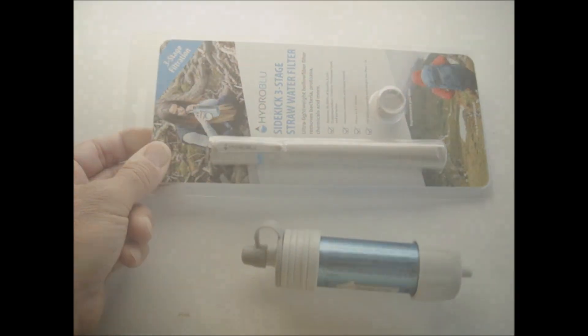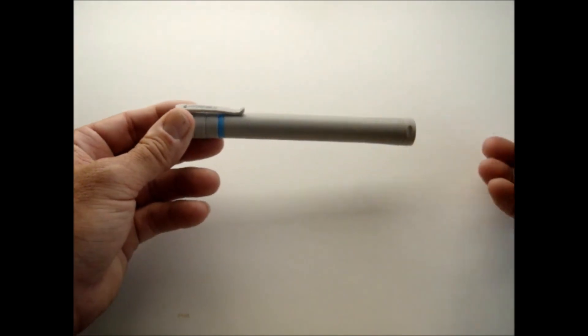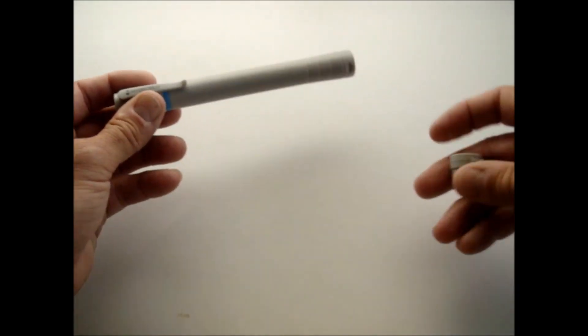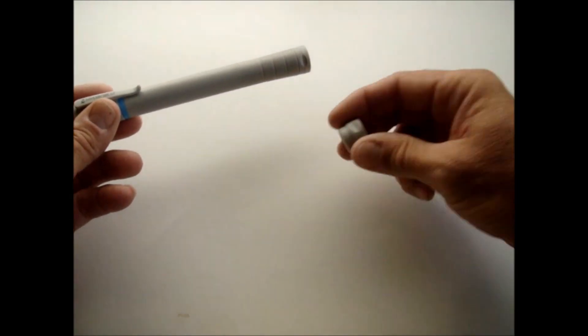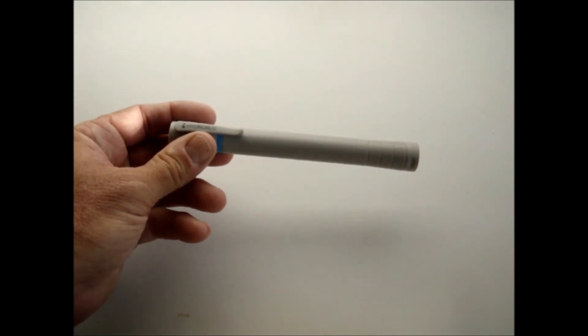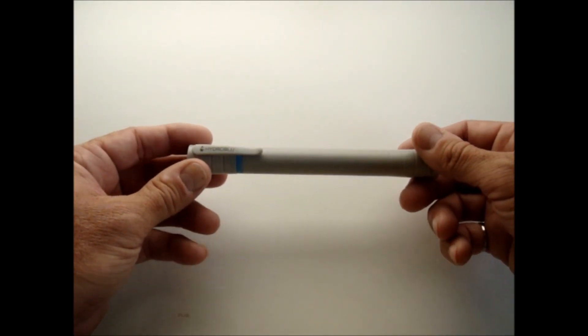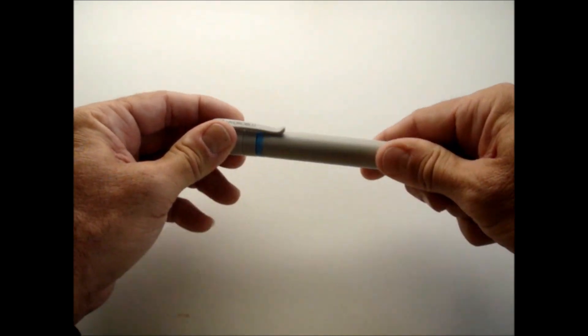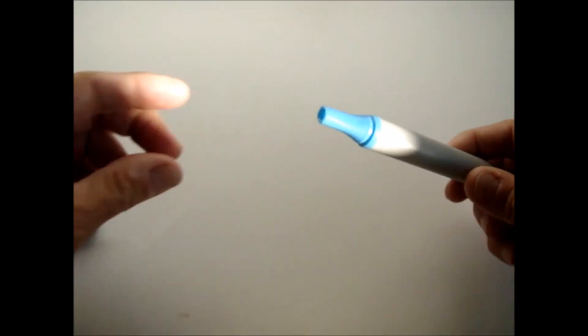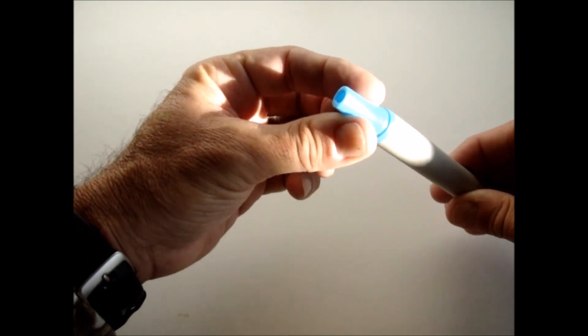This is what you get in the package: you get this pen looking straw and then you get a replacement pre-filter. The way you use these things is you take this off and so now you have the embouchure, the mouth end of the thing.